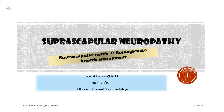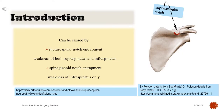Suprascapular Neuropathy: Suprascapular Notch and Spinoglenoid Notch Entrapment. Introduction. This condition can be caused by suprascapular notch entrapment, resulting in weakness of both supraspinatus and infraspinatus, or spinoglenoid notch entrapment, resulting in weakness of infraspinatus only.